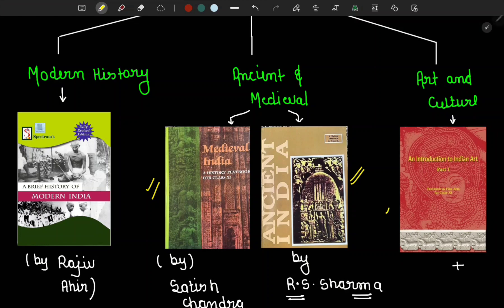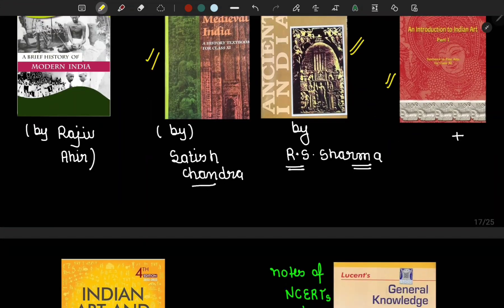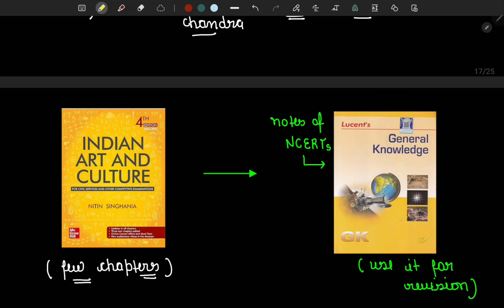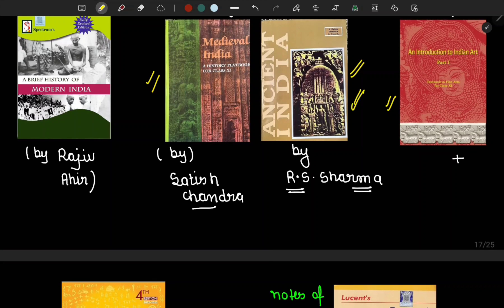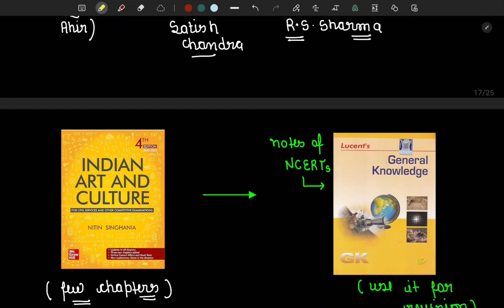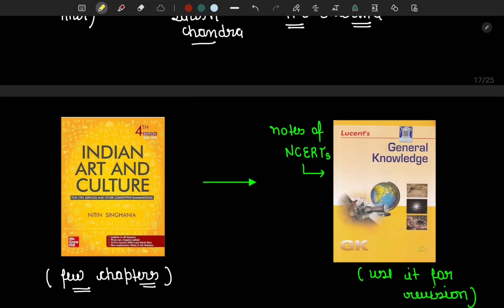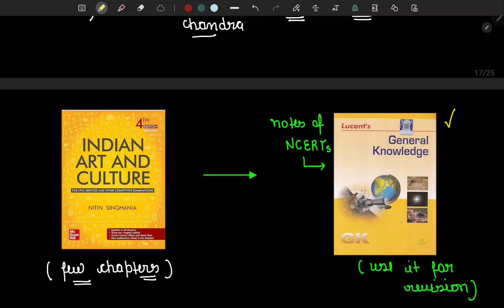For art and culture, we're going to follow the 11th class NCERT of Fine Arts and Indian Art and Culture by Nitin Singhania. After this, we need to follow only Lucent for revision because these are NCERTs, not in notes form. So here we will need notes for revision. Lucent has full art and culture, medieval and ancient history covered in 100 pages. I'll make a video on how to cover art and culture in minimum time period.